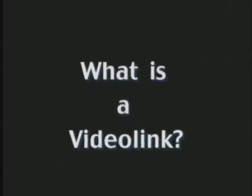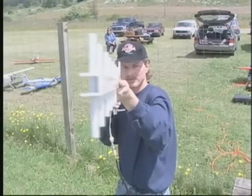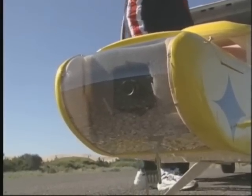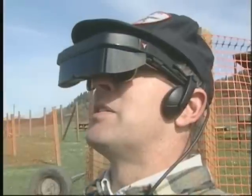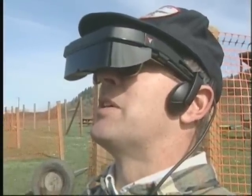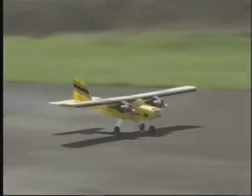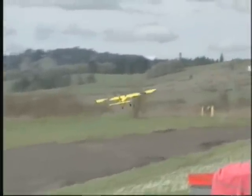The first thing I want to cover is: what is a video link? A video link is a wireless signal that can carry your airborne video and audio to the ground where it can be viewed on a monitor of your choice. A video link can seemingly place you in the cockpit of an RC aircraft. This is almost like sitting in a real airplane — the view is just incredible. Let's get started, shall we?